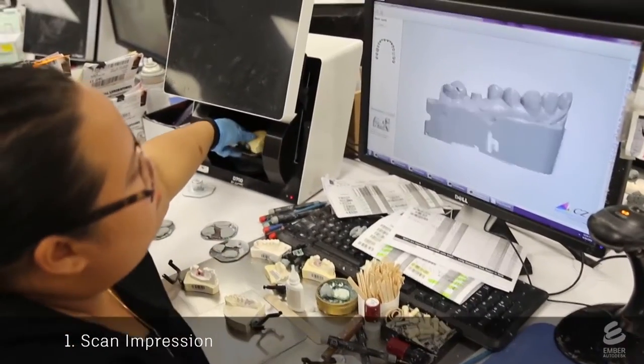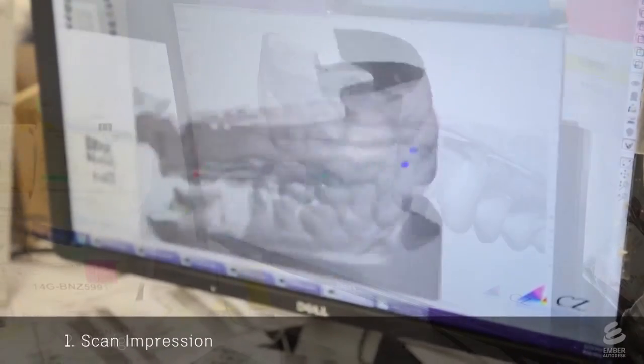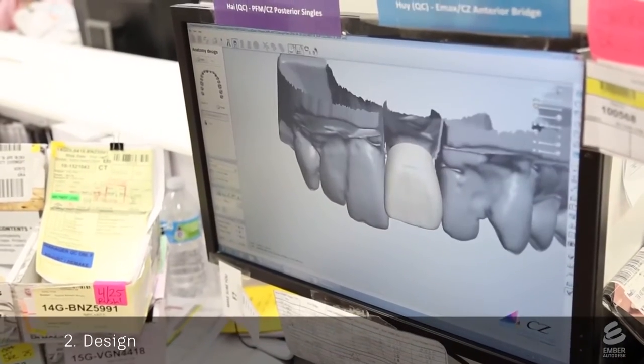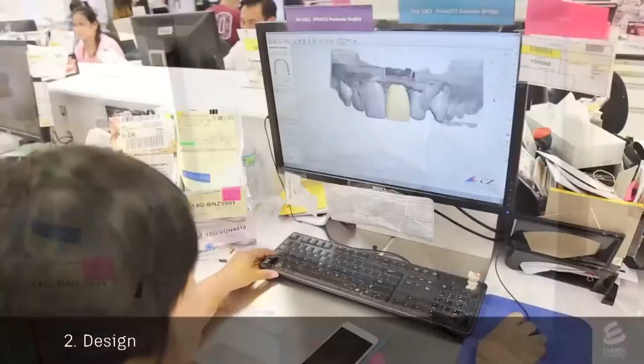They start by 3D scanning a dental impression, which yields a 3D mesh of the patient's mouth. A dental technician inserts a model crown into the mesh of the mouth. They use specialized software to orient and size the crown.